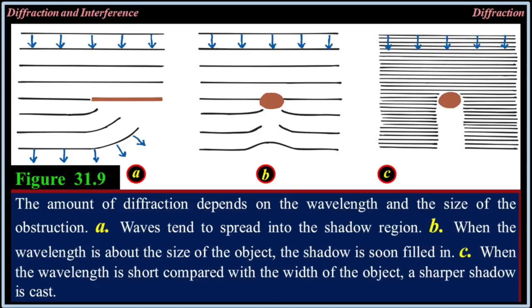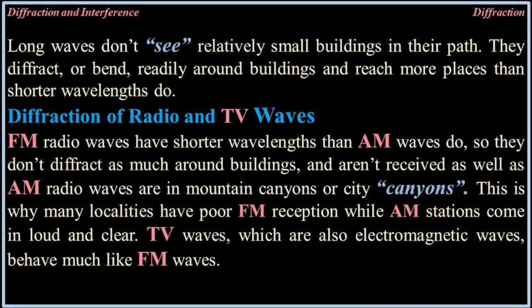Figure 31.9: The amount of diffraction depends on the wavelength relative to the size of the obstruction. Waves tend to spread into the shadow regions. When the wavelength is about the size of the object, the shadow is soon filled in. When the wavelength is short compared with the width of the object, a sharper shadow is cast. Long waves don't see relatively small buildings in their path — they diffract or bend readily around buildings and reach more places than shorter waves do. FM radio waves have shorter wavelengths than AM waves, so they don't diffract as much around buildings and aren't received as well as AM radio waves in mountain canyons or city canyons.